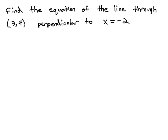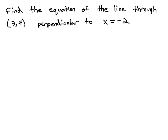So if we were given a problem such as this one, where we're asked to find the equation of the line through 3, comma 4 and perpendicular to x equals negative 2, we know this is a vertical line, x equals negative 2.